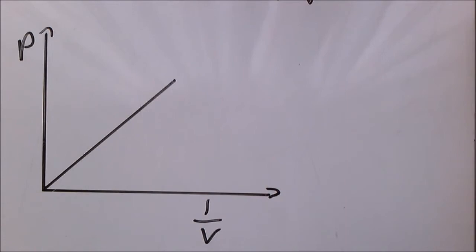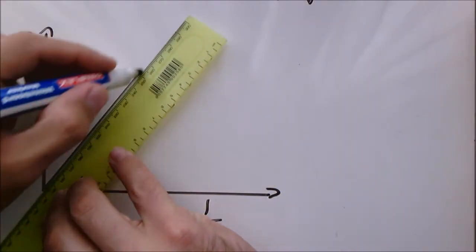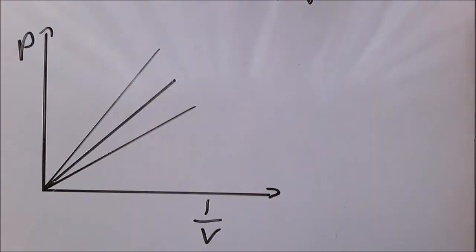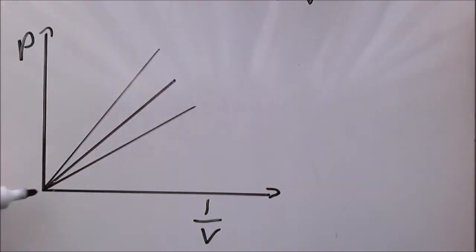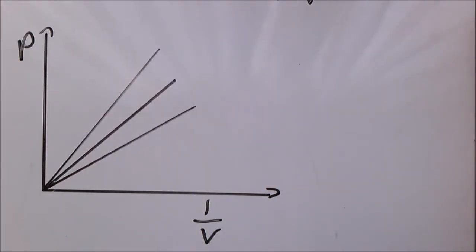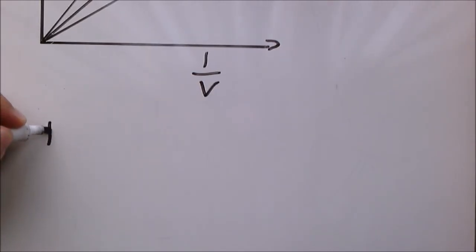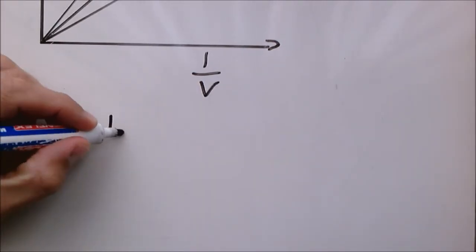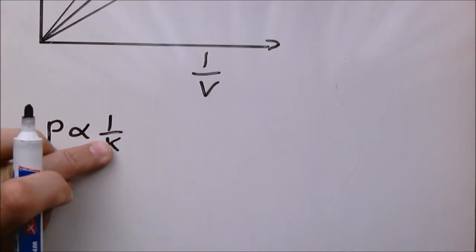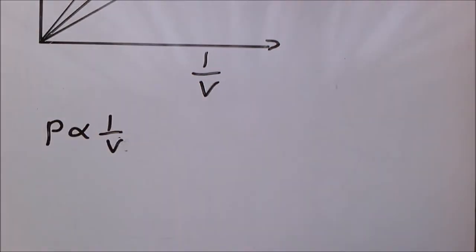Now if the scenario changes, let's say we change the temperature or we change the amount of gas particles, this graph will also change depending on different scenarios. But as long as the temperature remains constant and the amount of gas particles remains constant, we can follow a straight line in this regard.